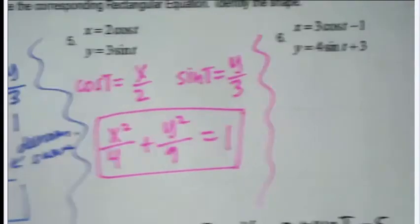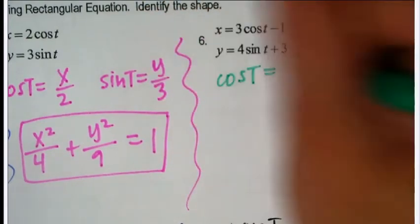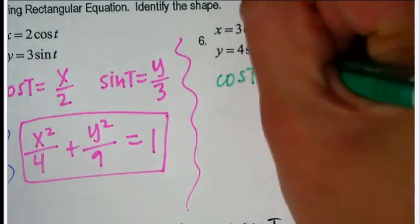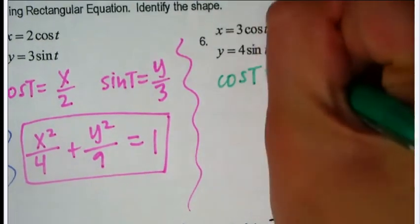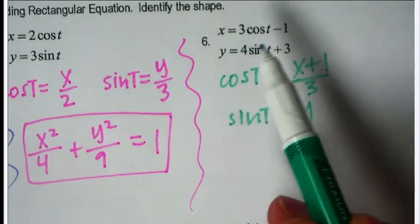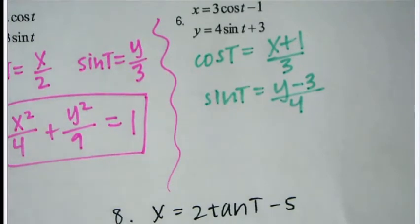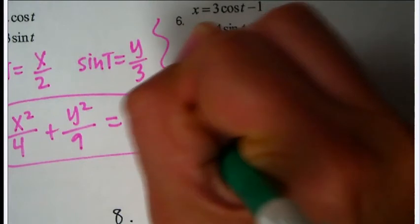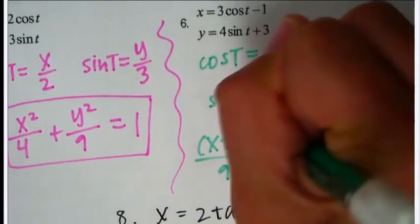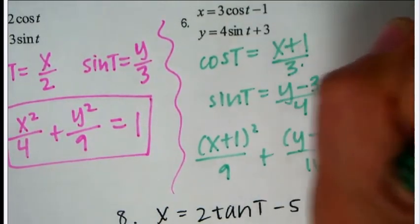For a case with extra addition and subtraction: to get cosine, take x, add 1, then divide by 3. To get sine, take y, subtract 3, then divide by 2. Square both and write the identity: (x plus 1) squared over 9 plus (y minus 3) squared over 4 equals 1.